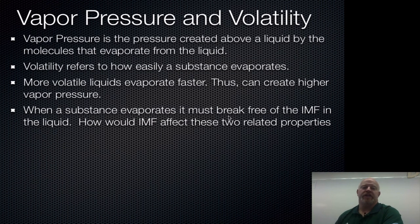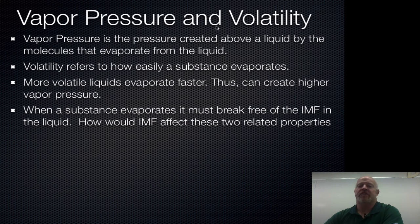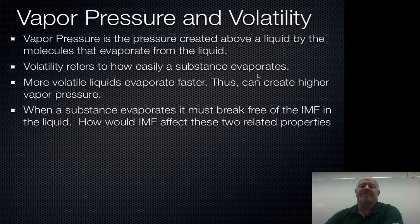The next topic is vapor pressure and volatility — these two things actually go hand in hand. Vapor pressure is any pressure that's created when you start to evaporate gases from a liquid. The result of having a vapor pressure is how volatile something is. We usually think of volatile meaning violent or explosive, but in chemistry and physics, volatility really refers to how easily something evaporates.